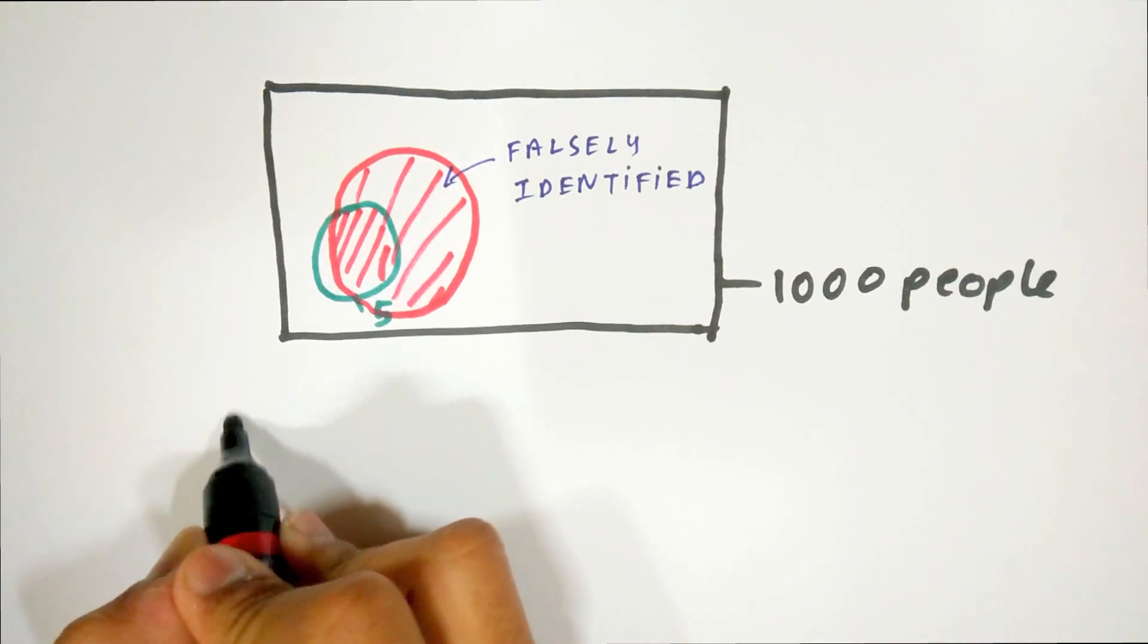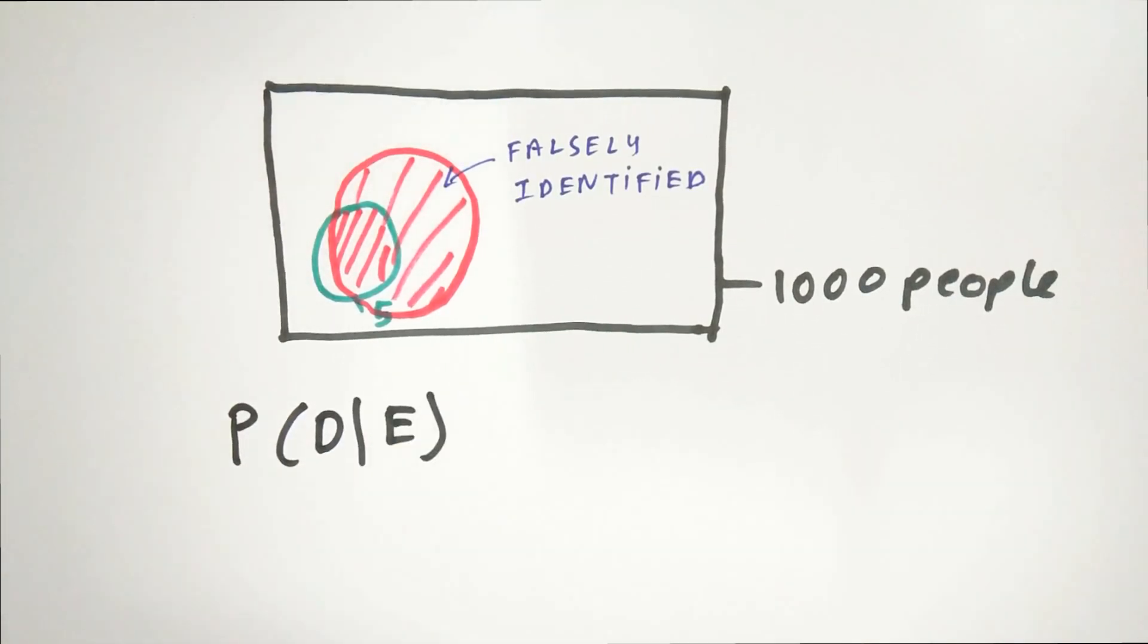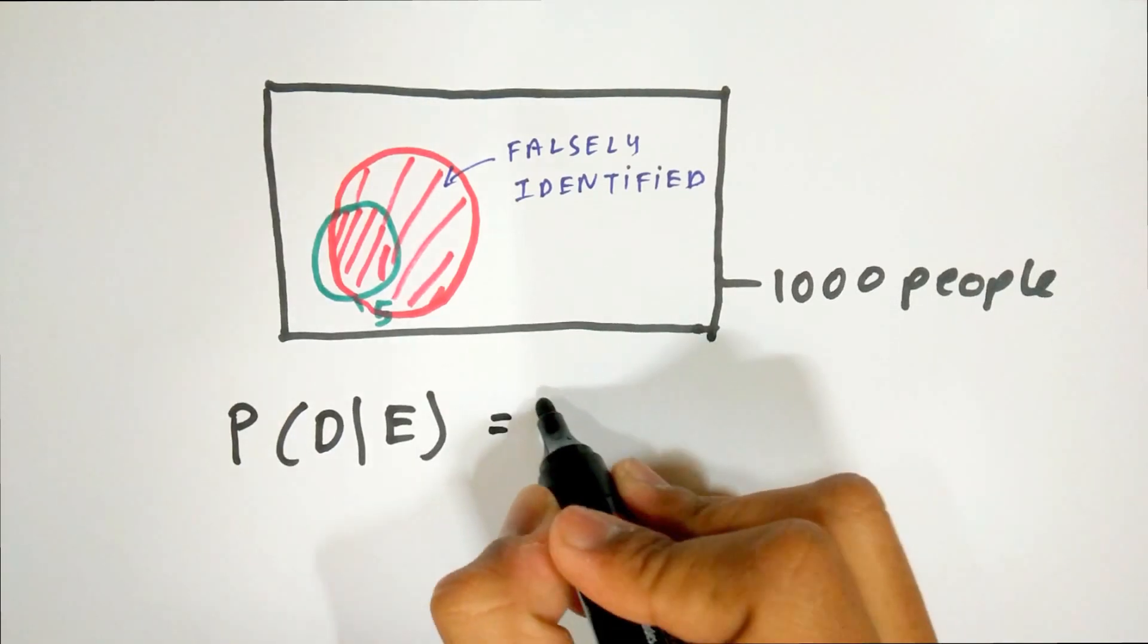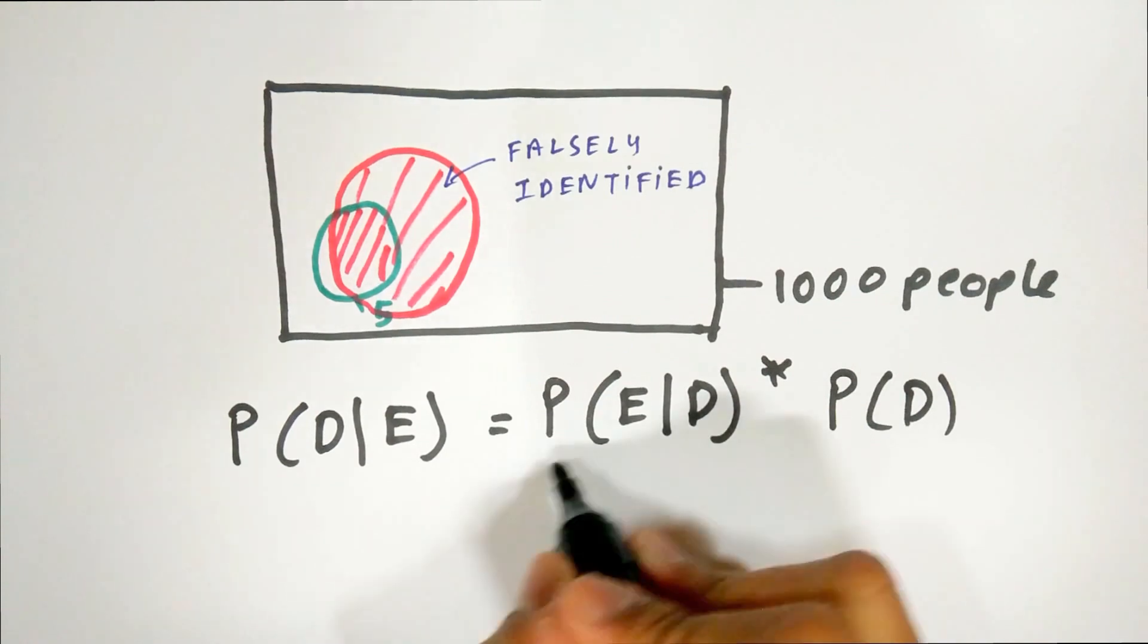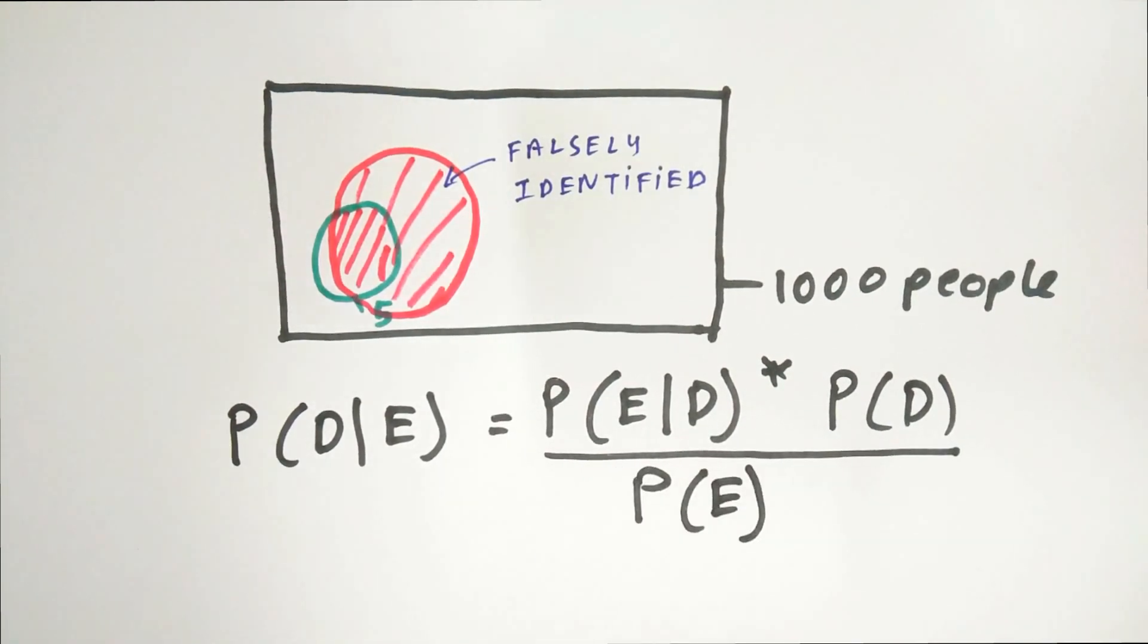By Bayes' theorem, the probability that you have the disease given that you tested positive is equal to the probability of the test giving positive results if you have the disease times the prior probability of you having the disease divided by the probability of testing positive.